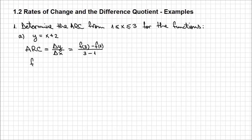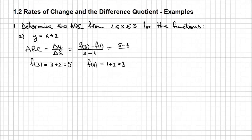How can we calculate f of 3? Simply by replacing the x in our original function with a value of 3. So I'm going to have 3 plus 2, which is 5. And f of 1 is going to be, instead of x, 1 plus 2, which is 3. So I can continue in the expression for the average rate of change: that equals 5 minus 3 over 2, which equals 1.